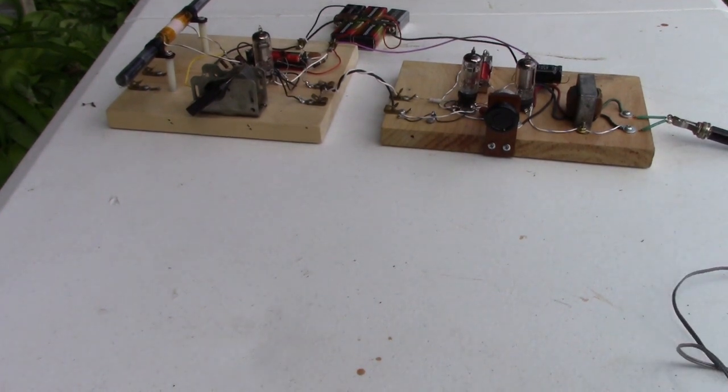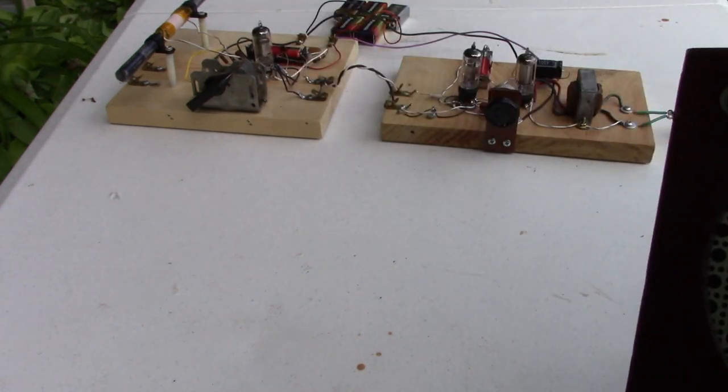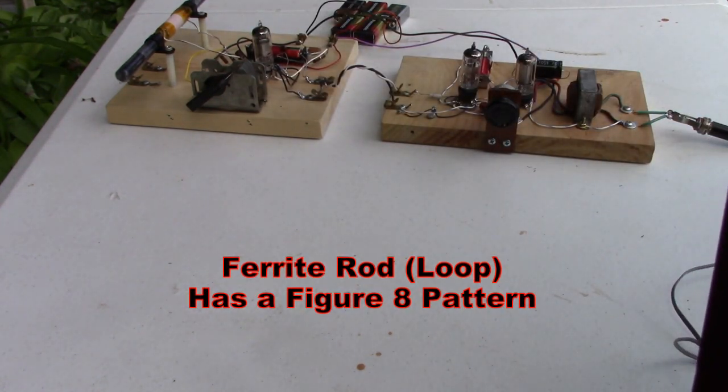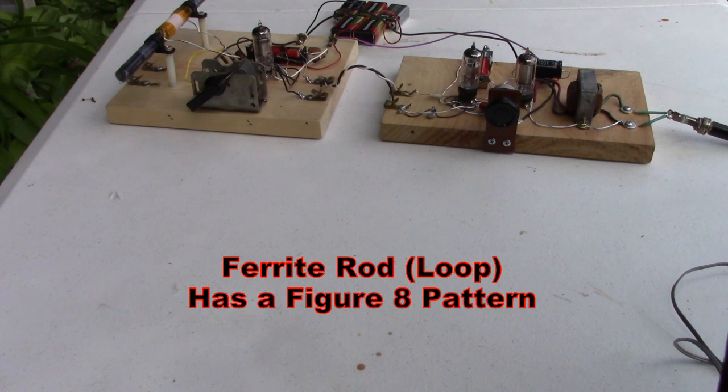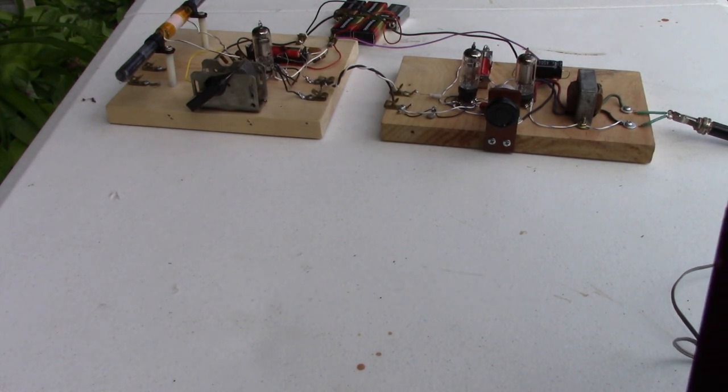The other thing we're up against is the loop antenna has a directionality associated with it. So you have to point it at the station broadside. So that's the other thing you're running up against when you're using loop antennas on tabletop.